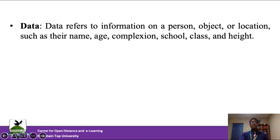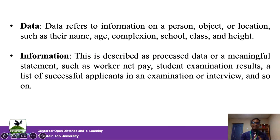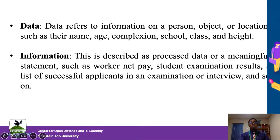There are some terms we need to familiarize ourselves with. Data refers to information about a person, an object, or a location — such as a person's name, age, school attended, or height. Information, on the other hand, is data that has been processed into meaningful statements. For example, the net pay of a worker is derived by processing their daily wage. Similarly, a student's examination results are produced by adding scores from various questions.